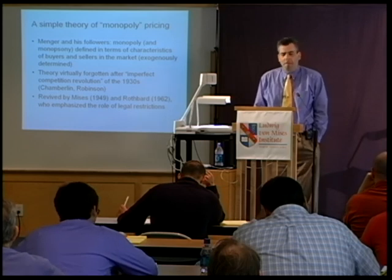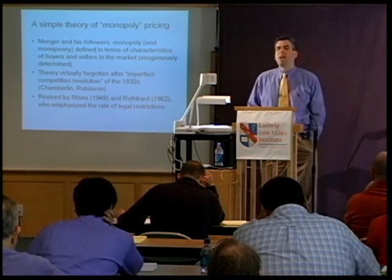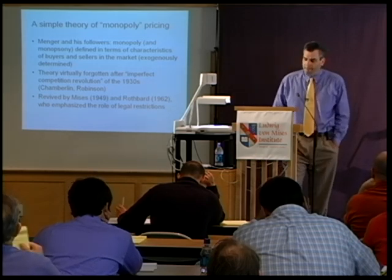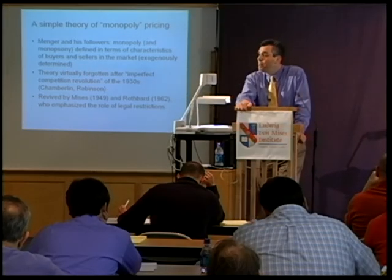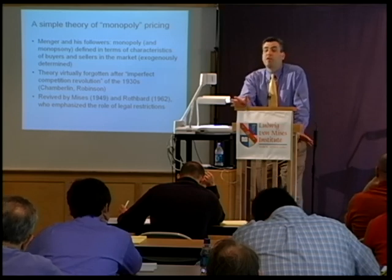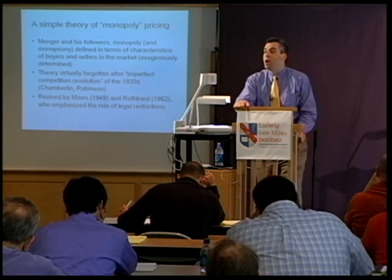Let's start with a very simple notion of monopoly pricing — how do prices of goods exchanged in real markets differ depending on various characteristics of those markets? Suppose for some reason there's only one seller in a particular market. Remember the car radio example: suppose there's only one car radio in existence I could possibly use to replace my broken one, and maybe there are other people who also seek car radios. For whatever reason, suppose there's only one seller — how does that affect the equilibrium price and quantity compared to a condition with many sellers?